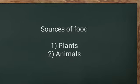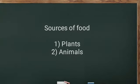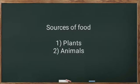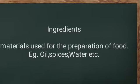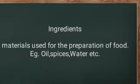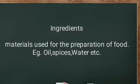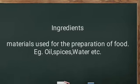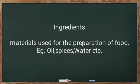The source of food is mainly divided into plants and animals. Ingredients are the materials we use for the preparation of food — example, oil, spices, water, etc.